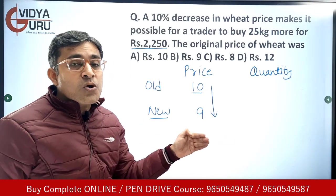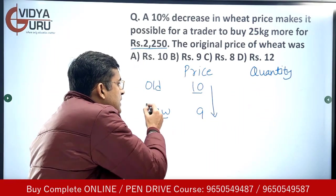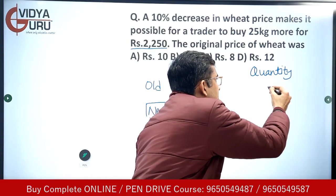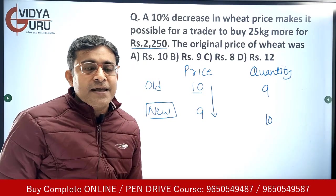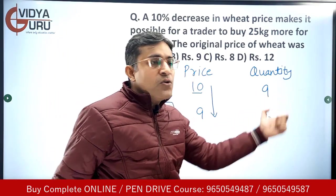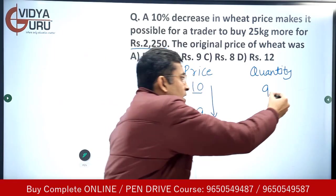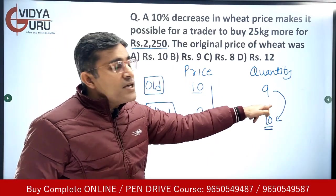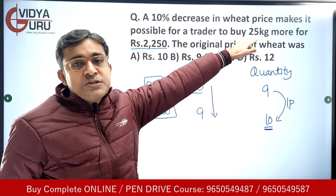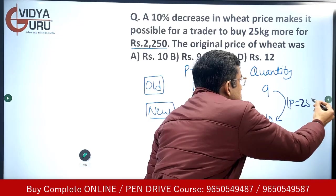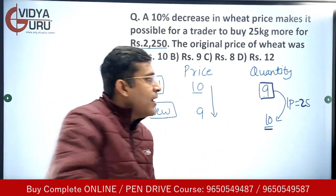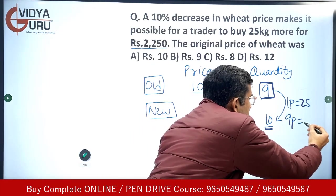The price has decreased from 10 units to 9 units, so obviously the quantity will increase in inverse proportion — in the ratio 9 is to 10. If earlier you were able to buy 9 units, now you are able to buy 10 units. There is an increase of 1 part in quantity, and this 1 part in kilograms is 25. So 1 part equals 25.